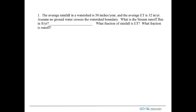The problem is that the average rainfall in a watershed is 50 inches per year and the average ET is 32 inches per year. You have no groundwater crossing the boundary, and you want to calculate the stream runoff. Here's the approach: we've got the watershed here in cross section, and the control volume would be like this.